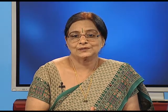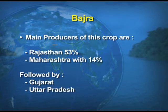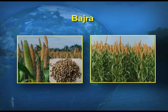When we say poor soil, we mean poor in fertility — soils not very rich in nutrients can still support Bajra production. The main producers are Rajasthan with 53% and Maharashtra with 14%, followed by Gujarat, Uttar Pradesh, and Haryana. You can see a visual of Bajra on screen.